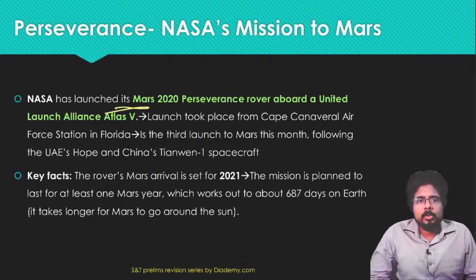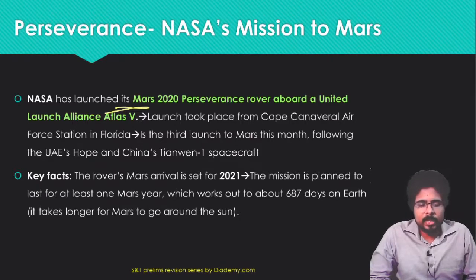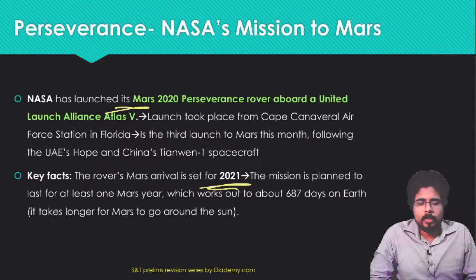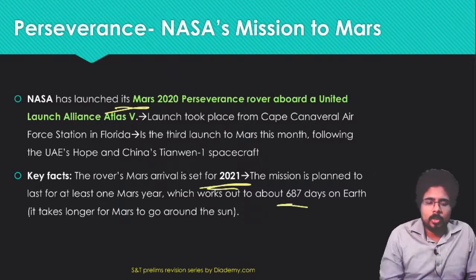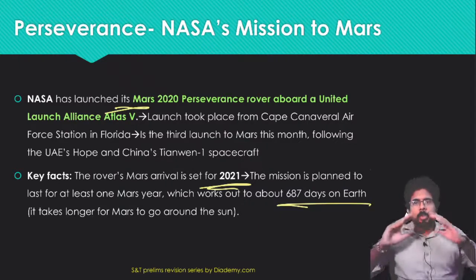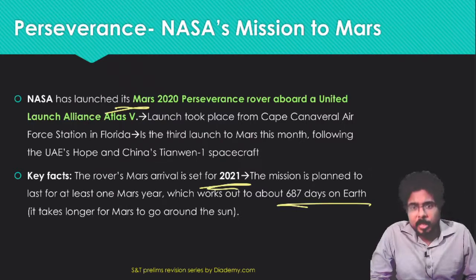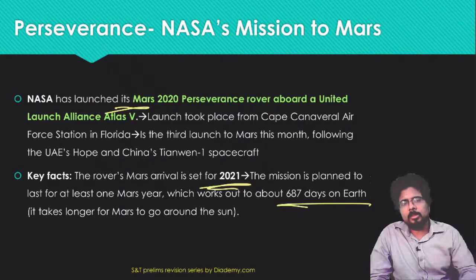Perseverance was the third Mars launch that month, after UAE's Hope and China's Tianwen-1. Key facts: the rover will arrive on Mars in 2021, the same as Tianwen-1, and it will have a mission life of about 687 days — which is one Martian year, different from an Earth year. Perseverance is NASA's mission to Mars.